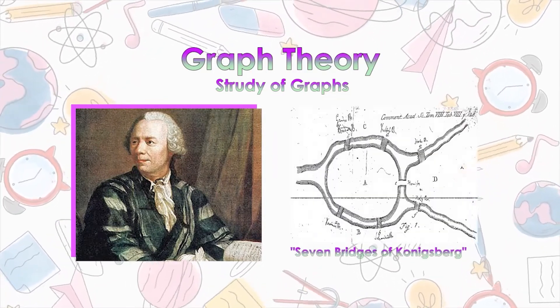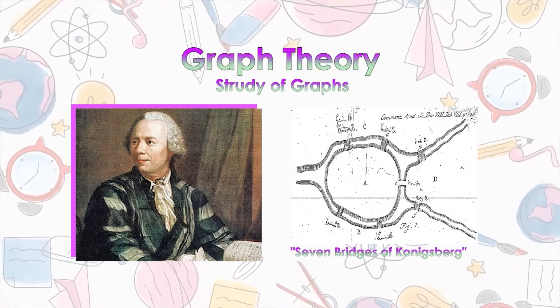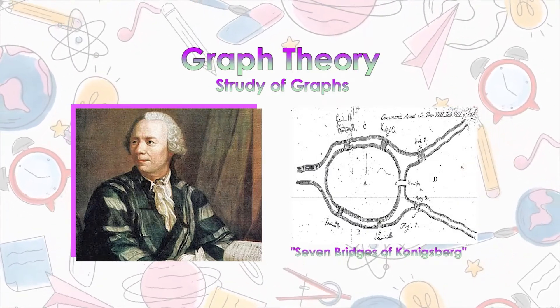It was discovered in 1736 by a Swiss mathematician named Leonard Euler. The Seven Bridges of Konigsberg, which he published, was the first paper in graph theory.